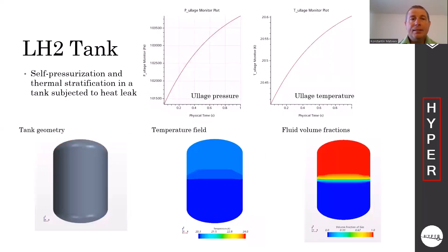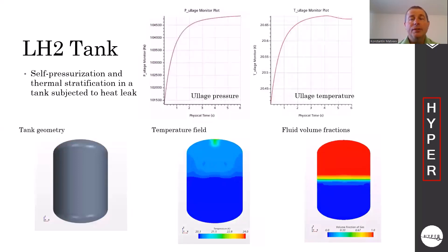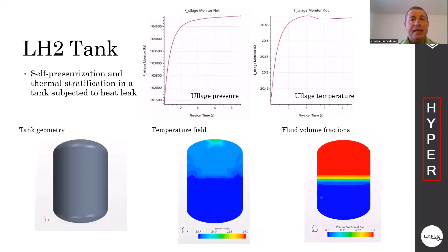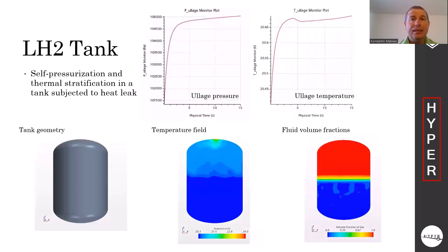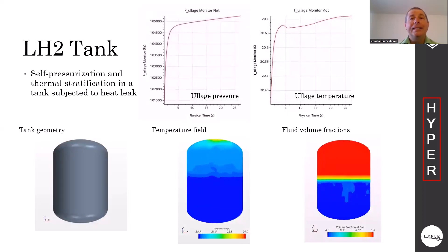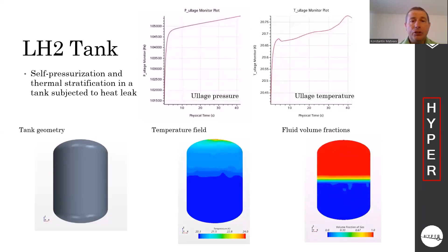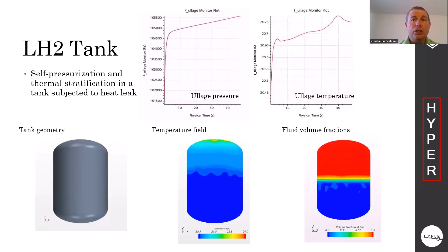The second scenario is self-pressurization and thermal stratification in a similar tank. Now there are no oscillations, so pressure and temperature of the ullage increase gradually in time. You can observe significant temperature stratification inside the ullage space.